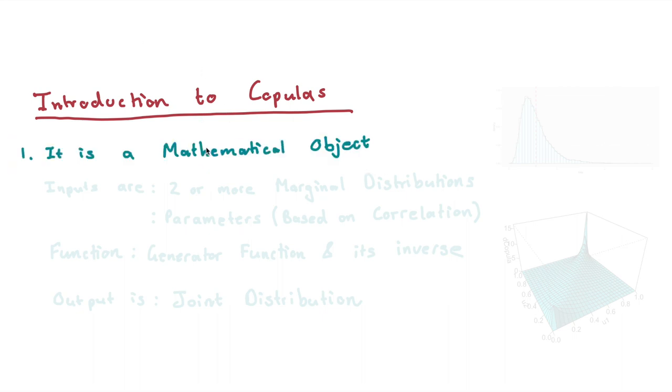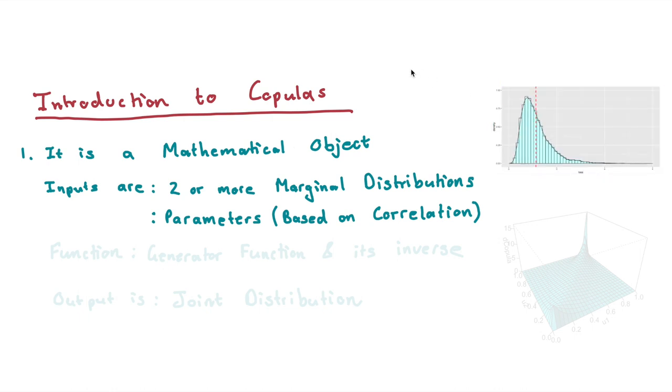Copulas essentially are mathematical objects, and you can almost think of them as a model in the sense that we have some inputs. The inputs are normally two or more marginal distributions, and also some of the copulas tend to have parameters that are based on correlations. Some of the parameters will even have a function, which is sometimes known as the generator function as well as its inverse. But all copulas will have the same output, which is something known as a joint distribution.